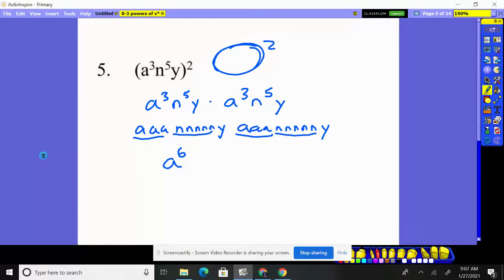Sixth, n, n, n, n, n, n, n, that's n to the tenth. And then you have a y and another y, so you have y squared. So here is your final answer to number five.